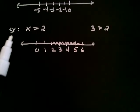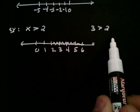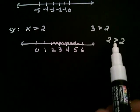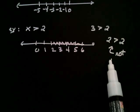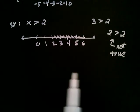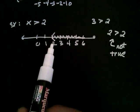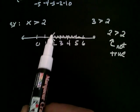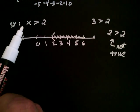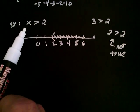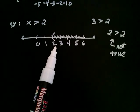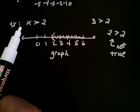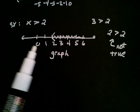Now, what about the number two itself? If I put a two in for x, is it true that two is greater than two? No, that's not true — three is greater than two, but two is not. So I create a symbol to tell my reader that. I put a parenthesis right on the two, opening to the right. So what I have now is shading to the right of two, but right on two I have a parenthesis to tell my reader that you can plug in any number to the right of two, but not two itself. This is how we graph the set of numbers that make this inequality true.